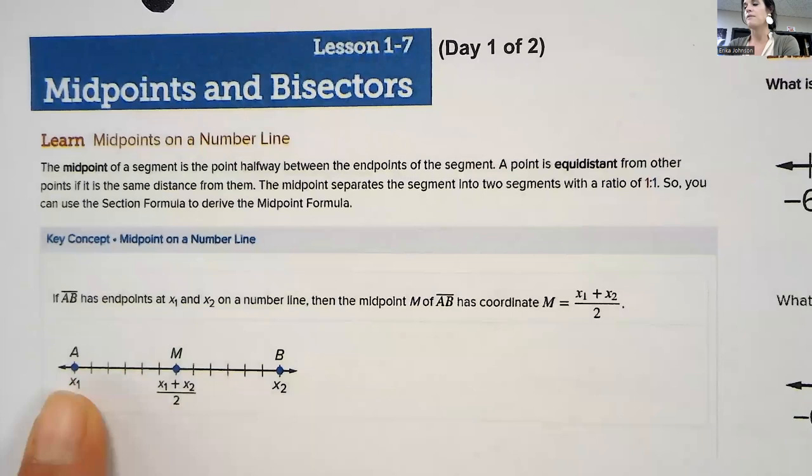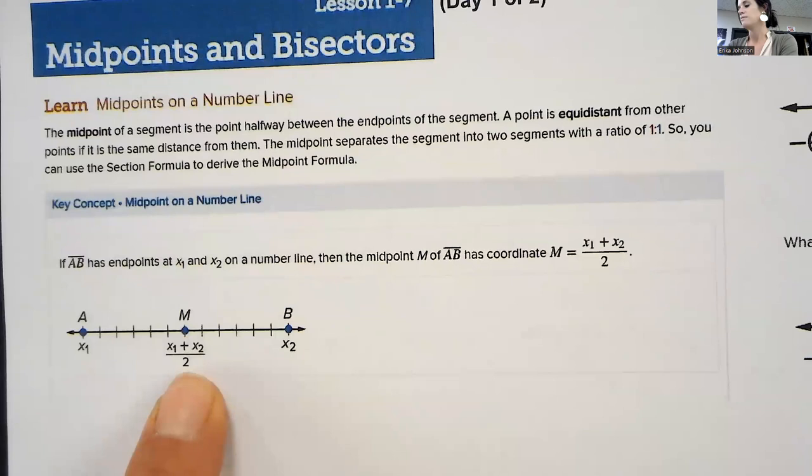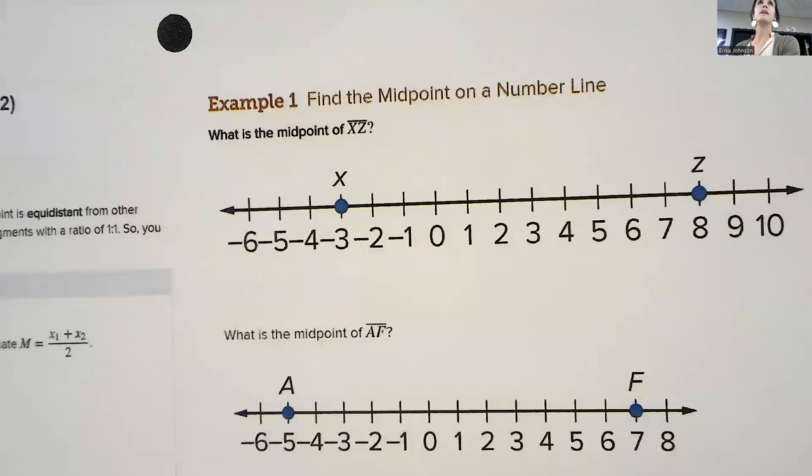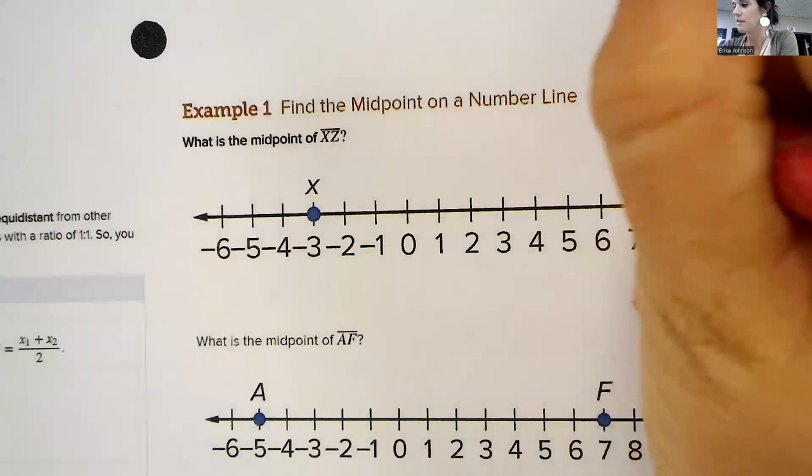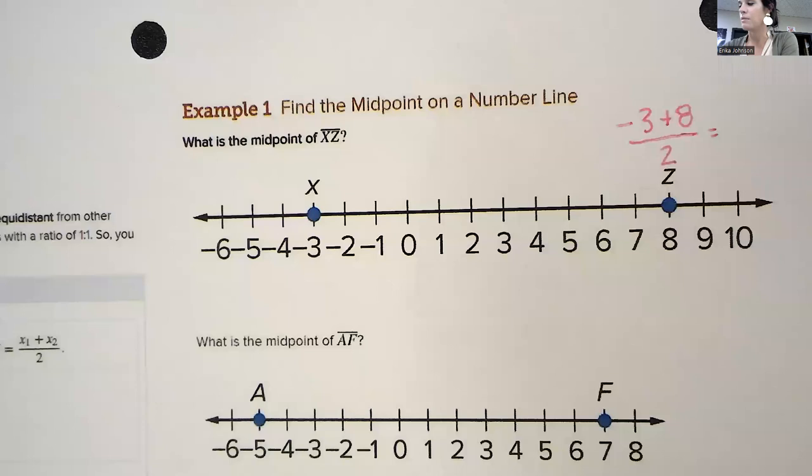And here's my formula. If you want to find halfway between them, you add the two that you're given and divide it by two. So let's try that. It says, what's the midpoint of XZ? So we're going to add the two points. So negative three plus eight, and then divide that by two. Negative three plus eight is five. Five divided by two would be 2.5.